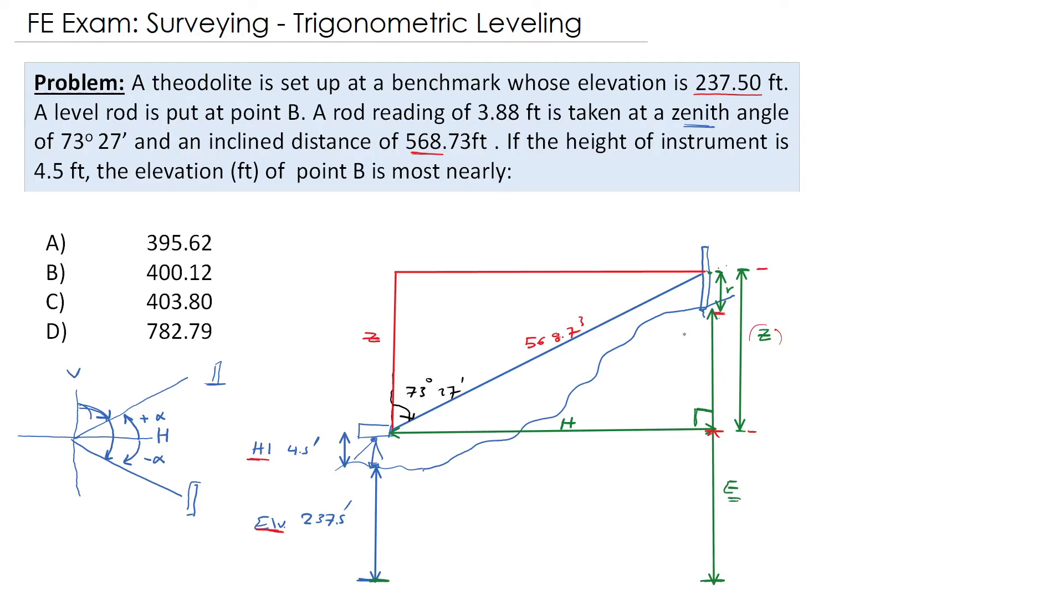The elevation from here to here is delta z, and the distance from here to here is the reading of the rod. So the elevation of this point is simply this distance plus this distance, which is the elevation of the benchmark plus the height of the instrument plus delta z minus the reading of the rod.